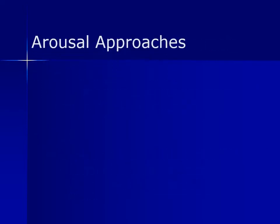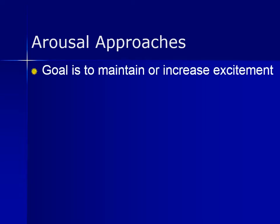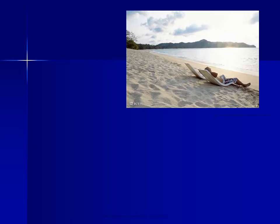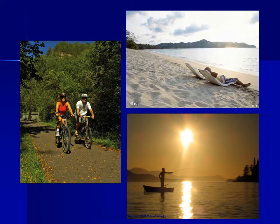The arousal theory of motivation suggests that people take certain actions to either decrease or increase levels of arousal so it maintains a certain level. When arousal levels get too low, a person might watch an exciting movie, go for a jog, or they may need even more stimulation and would engage in some extreme activities. When arousal levels get too high, on the other hand, a person would probably look for ways to relax, such as meditating, reading a book, hanging out at the beach, going for an easy bike ride, or even fishing.